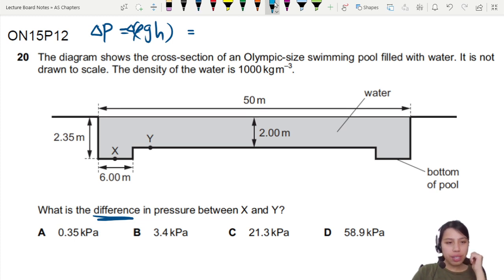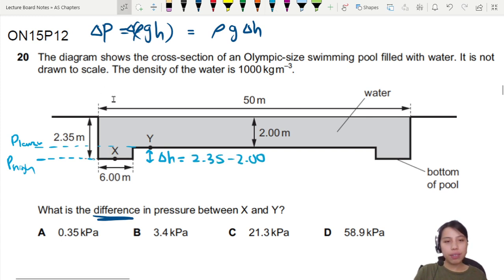So why is there a pressure difference? At X is a high pressure, at Y is a lower pressure because not so much water pressing down on you. So we can say okay, so the difference is difference in height. So let's find the difference in height, this little height here. So this height delta h will be 2.35 minus 2, that's this given length here all the way down to the bottom minus the shallower height here.